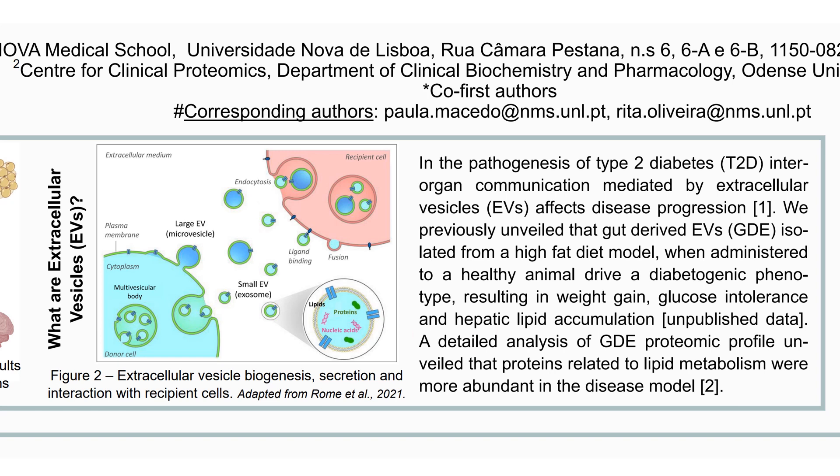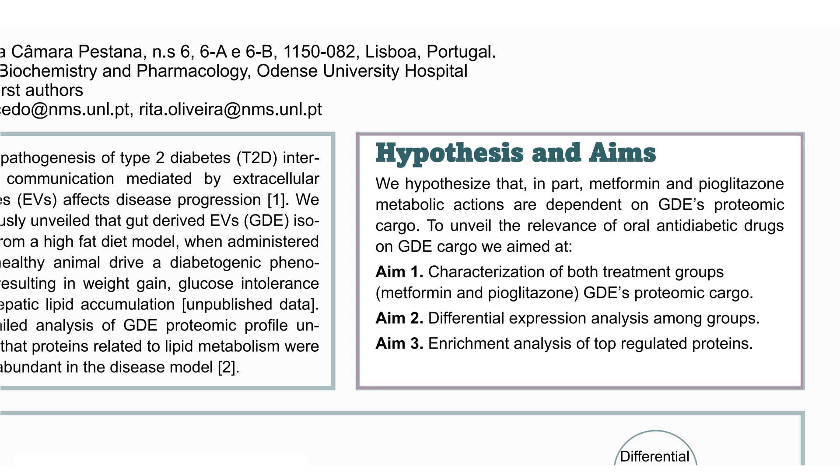We previously unveiled that gut-derived EVs isolated from a high-fat diet model, when administered to a healthy animal, drive a diabetogenic phenotype resulting in weight gain, glucose intolerance, and hepatolipid accumulation. And many gut-derived EVs proteins are related to lipid metabolism. So we hypothesized that, in part, metformin and pioglitazone metabolic actions are dependent on gut-derived EVs proteomic cargo.